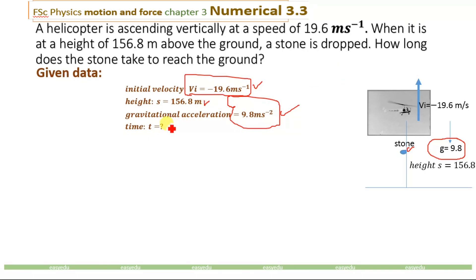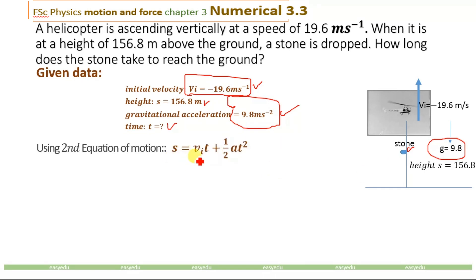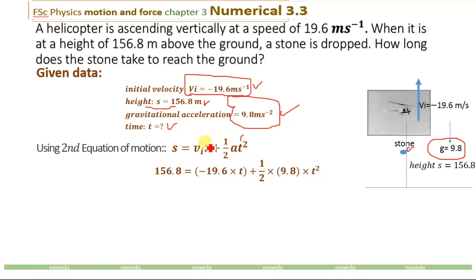We are going to determine the time taken by the stone to reach the ground. For the solution of this numerical, we will use the second equation of motion: s = vᵢt + ½at². We will determine the value of t. In the given data, we have the initial velocity, the height which is the distance 156.8 meters, and the gravitational acceleration as 9.8 meters per second squared. We will substitute the values: displacement is 156.8 meters, and the value of initial velocity is minus 19.6 meters per second.